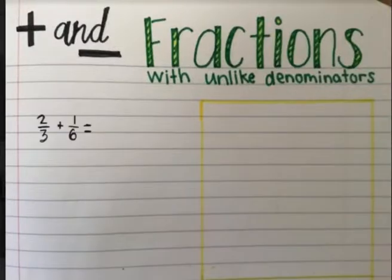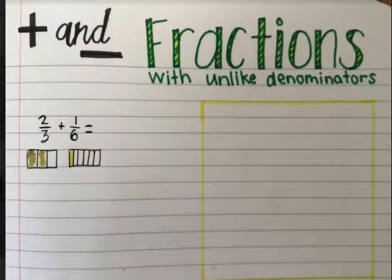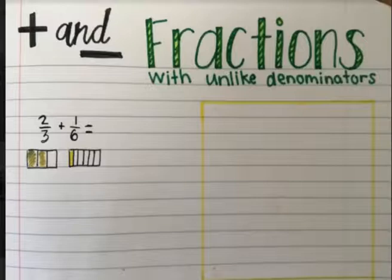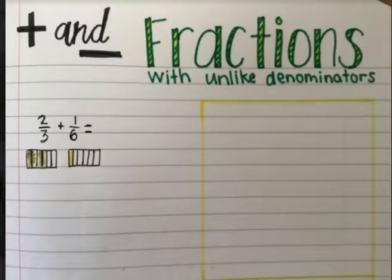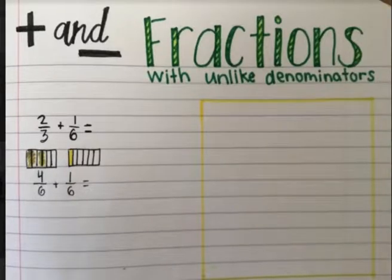First let's take a look at an example. Here we have two thirds plus one sixth. We want to first model two thirds. Here's my two thirds, and here I have one sixth. I noticed that my thirds are much bigger than my sixths, and I cannot add them the way they are right now. But I know that sixths are related fractions to thirds. And if I partition each third into two smaller pieces, now I do have sixths. Four sixths is equivalent to two thirds, so I can add four sixths to one sixth, and that is how I can calculate.